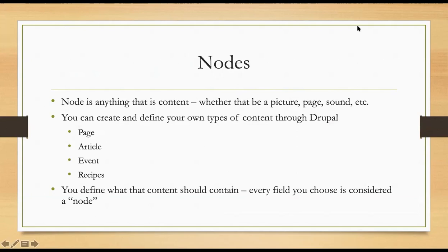The last framework piece is nodes. A node is anything that's content — every time you upload a picture or create a new page, you're given a node with a number. Using PathAuto, you can assign an actual URL instead of a number. You can also create custom node types. By default you have web pages and articles, but you can create specific nodes for your use case — like a recipe node type that asks for recipe-specific fields. You define what content should be included in each type.